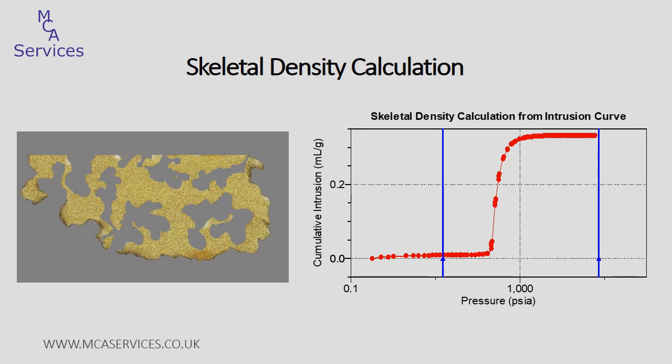Skeletal density is calculated by excluding the volume of all open pores within the sample that are intruded with mercury — in this case, pores that are larger than 0.003 microns diameter. For a porous sample, this density value is closer to the absolute density of the material. Absolute density, sometimes called the true density, is calculated by excluding all open pores from the volume function of the calculation, and that's usually undertaken by an alternative displacement technique, for example helium pycnometry.